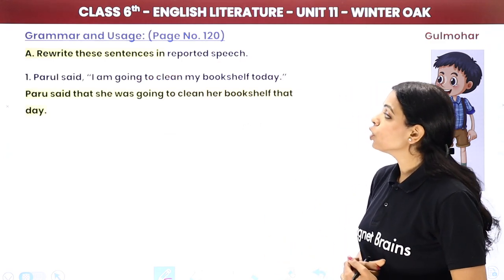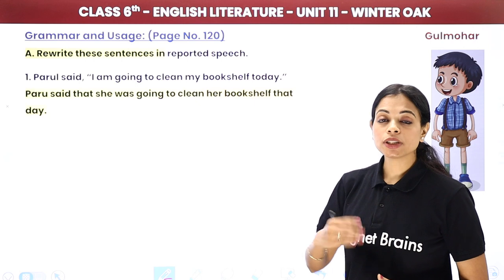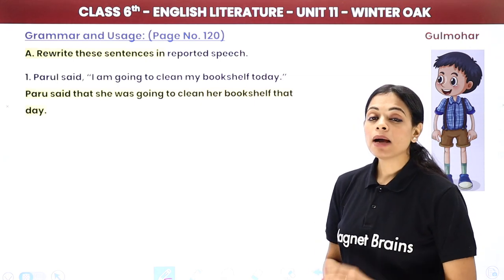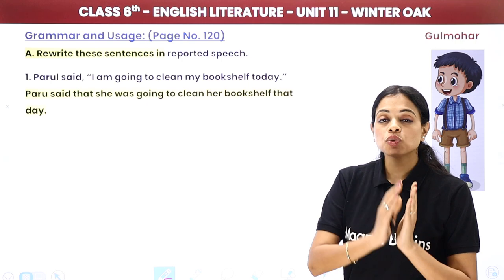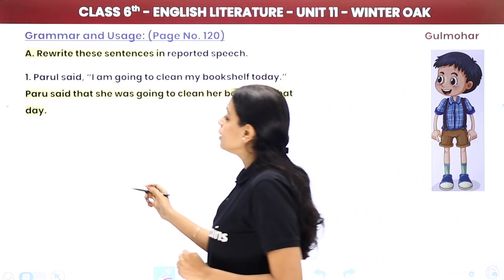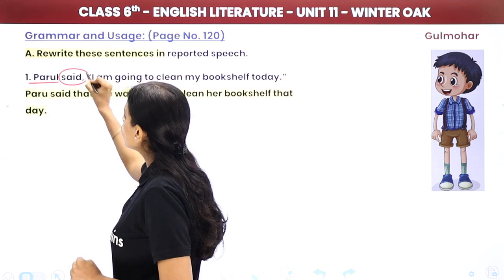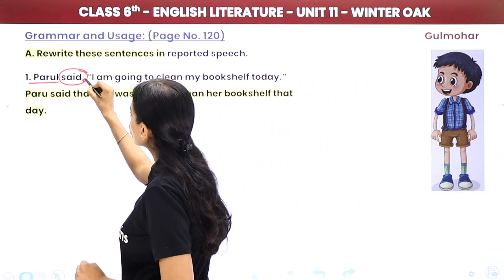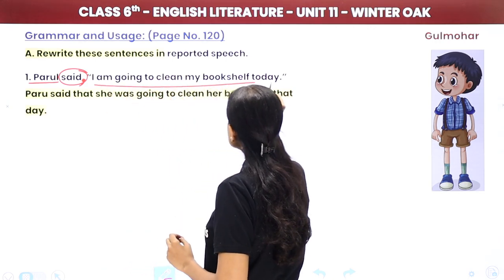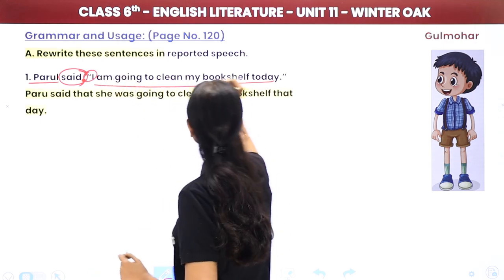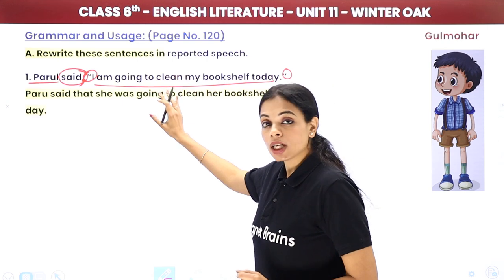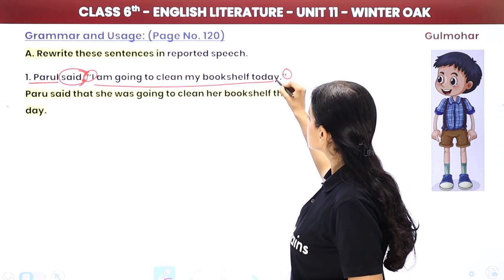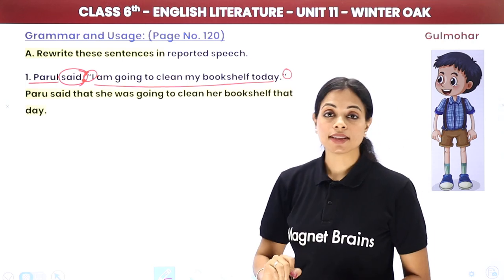You have questions here — all sentences are in reported speech, meaning indirect speech. For example: Parole said, 'I am going to clean my bookshelf today.' There are certain rules to transform direct speech into indirect speech. The speaker is followed by a reporting verb such as 'said' or 'told,' then a comma, and the exact words in quotation marks — double inverted commas.